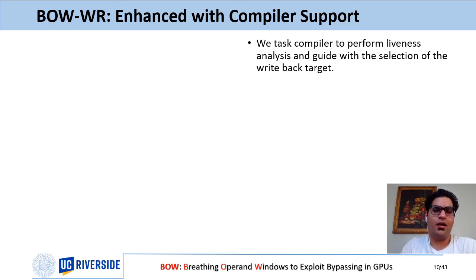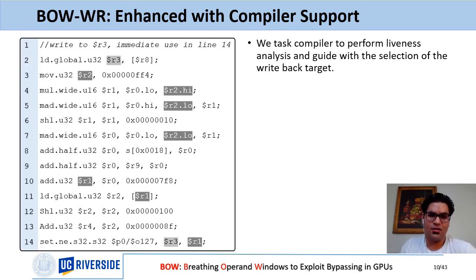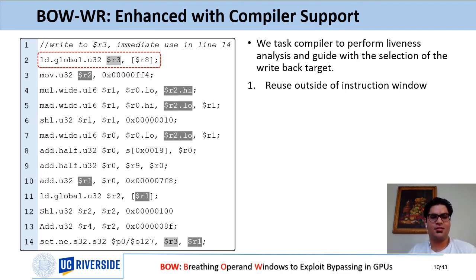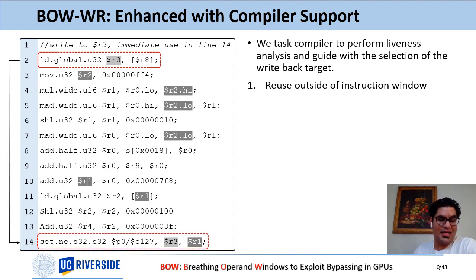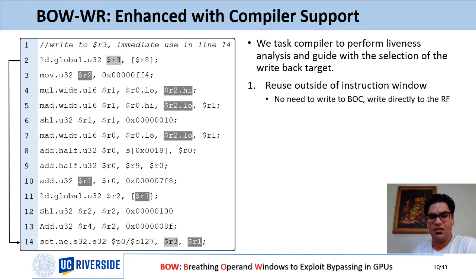To solve this, we task the compiler to perform liveness analysis and guide the selection of the write-back target. There are three possible actions after an instruction output value is generated. In the first case, immediate reuse for a value is outside the current instruction window. For example, instruction on line two is a global load writing to R3, whose immediate reuse is at line 14 — outside the window. In this case, there is no need to write R3 into the BOC; it is better to write it directly back to the register file.